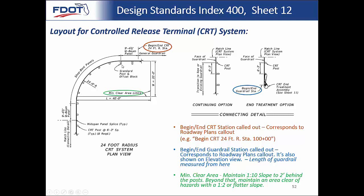You can clearly see the difference — a standard post with offset block versus a CRT post going all the way around the system. When the vehicle hits, it generally takes up almost the entire clear area limit in order to capture the vehicle and absorb all that energy. So if you had a hazard or canal behind the system, chances are the vehicle is going to end up right in that canal.